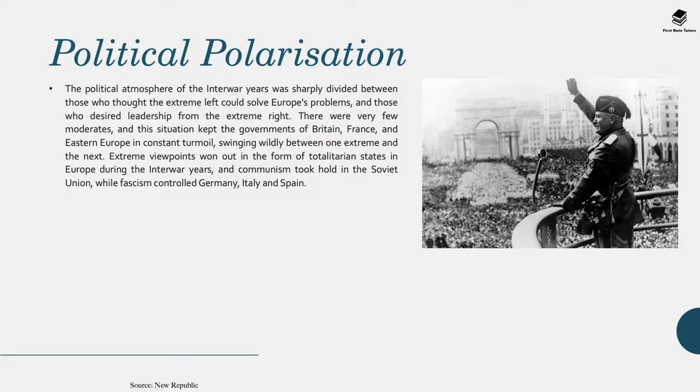Another thing that was really important during the interwar period was political polarisation. The political atmosphere was sharply divided between those who thought the extreme left could solve Europe's problems and those who desired leadership from the extreme right. There were very few moderates, and this kept the governments of Britain, France and Eastern Europe in constant turmoil as they swung wildly between one extreme and the next. Extreme viewpoints won out in the form of totalitarian states — communism took hold in the Soviet Union under Stalin's leadership, while fascism controlled Germany, Italy and Spain.